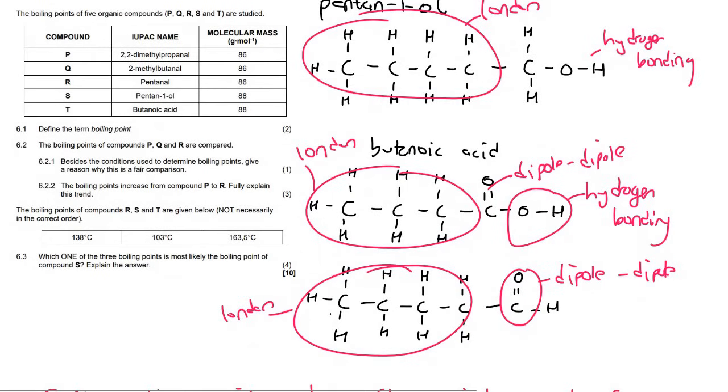So if we have a look carefully, the question says which of the three boiling points is likely compound S? So compound S is the alcohol. So that one should be the middle one, because we said that pentanol is the lowest, butanoic acid is the highest boiling point, and then pentan-1-ol is the middle. So we look for the middle value over here, and that would be the 138 degrees.